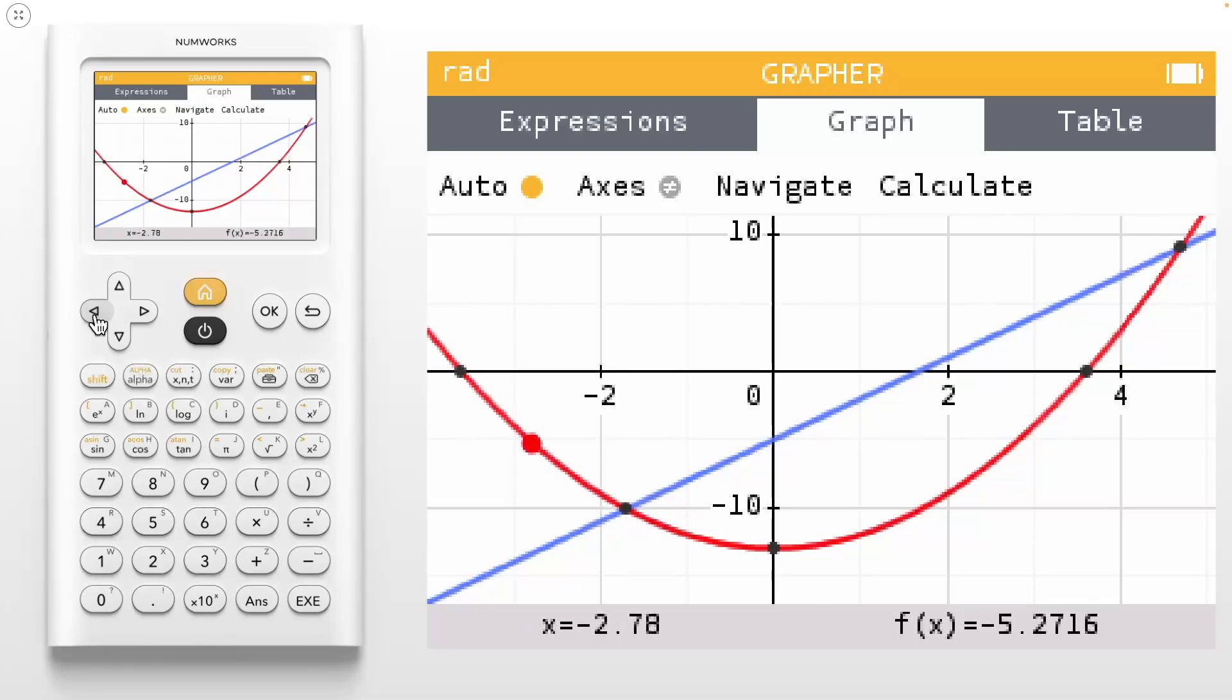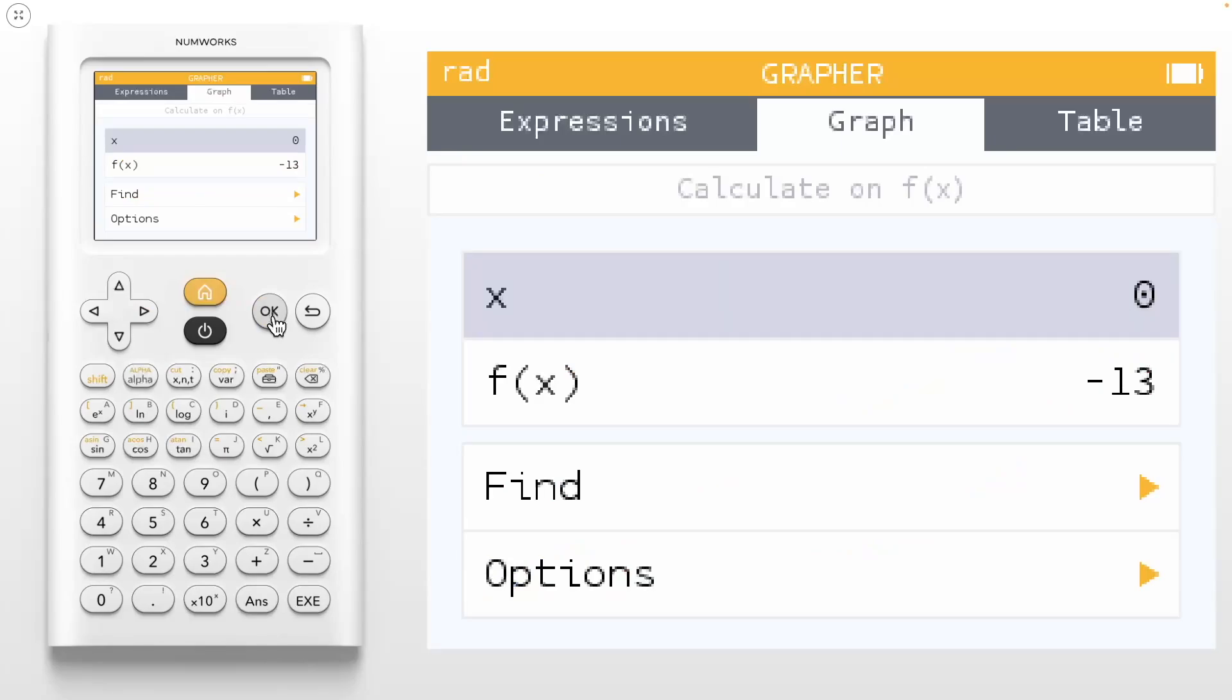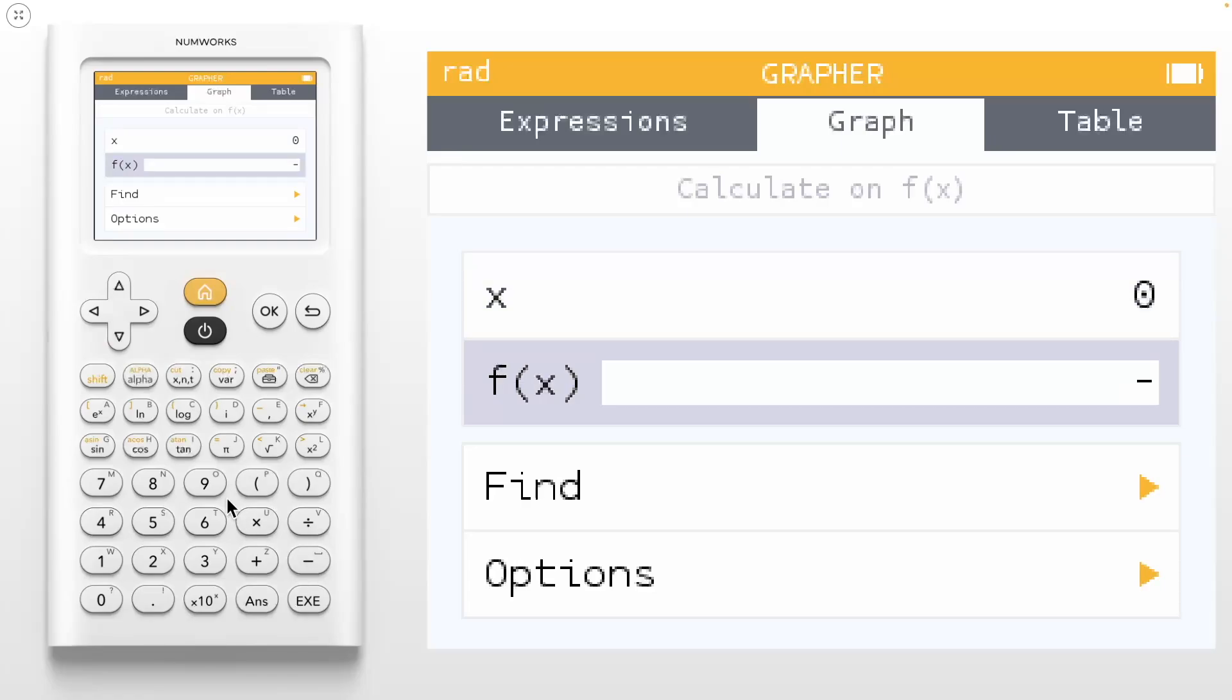Notice the x and f of x values in the bottom banner. As we trace, we can navigate to points of interest. We can see the zeros, intercepts, and extrema. Use the up or down keys to move between the functions. Pressing OK or your toolbox on a function is going to provide you with more options. We can jump to an x or f of x value, find features and values, and even access the options.